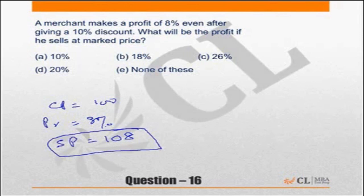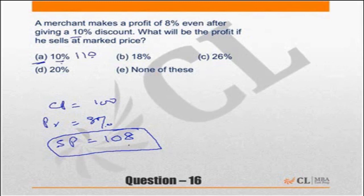Let me assume the correct answer is choice A. If choice A is correct, that means the mark price should be 110, implying 10% profit. But if the mark price is 110, a 10% discount gives 99, which is not equal to 108. Hence, this is an incorrect answer.